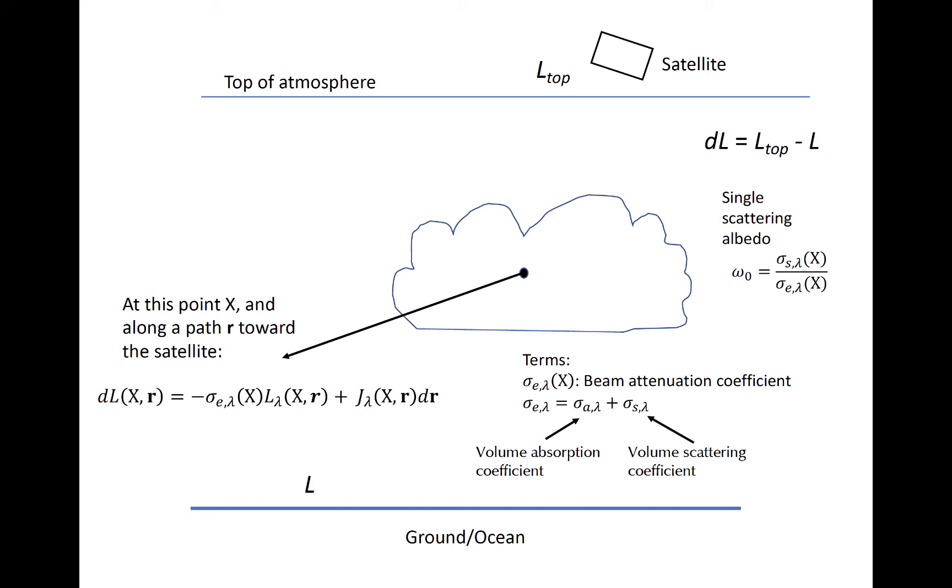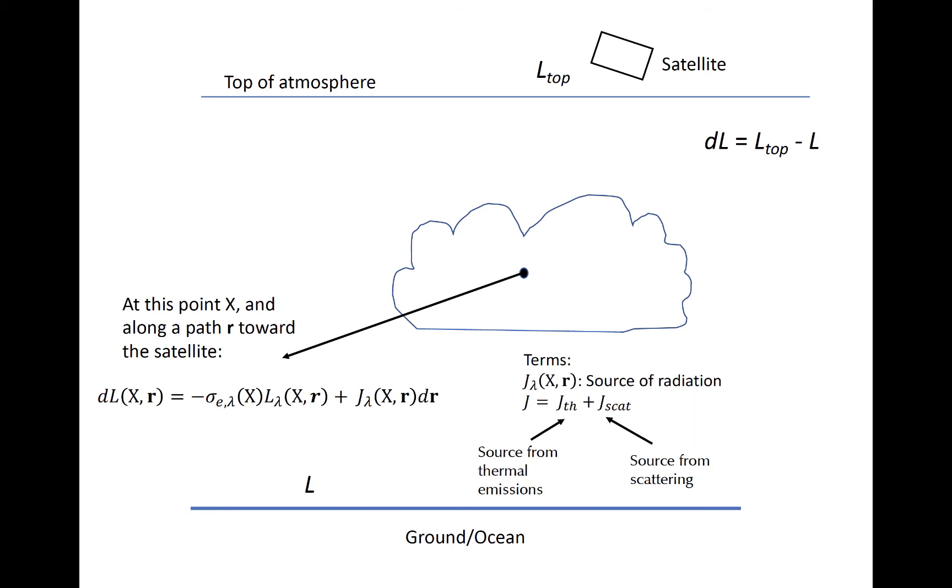The single scattering albedo is low for wavelengths that are not scattered in the medium through which they propagate, for example, microwaves through clear, dry air. J represents the sources of radiation at that point toward the satellite. It consists of a source from thermal emissions and a source from scattering in a path toward the satellite.